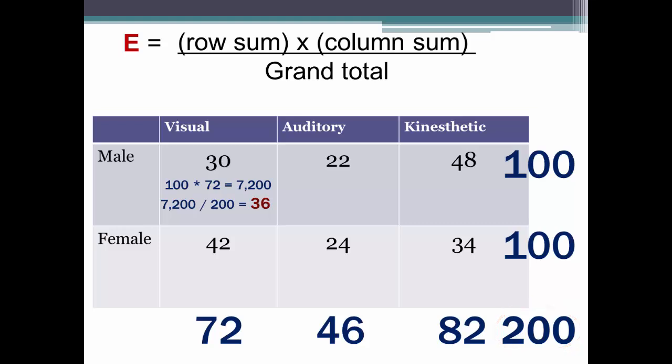Go to the next cell, the male auditory learner cell. Row sum is 100 times the column sum of 46 equals 4,600. Divide that by the grand total, and you get 23.